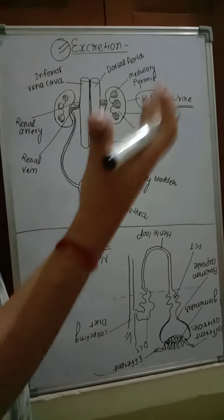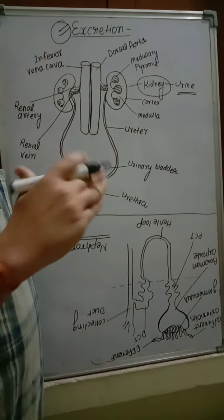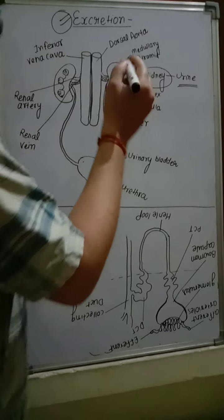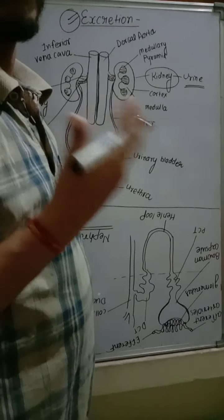Generally organisms excrete material according to the amount of water. Like ammonotelic, ureotelic and uricotelic. Ammonotelic organisms are aquatic organisms, like most of the invertebrates and tadpole.